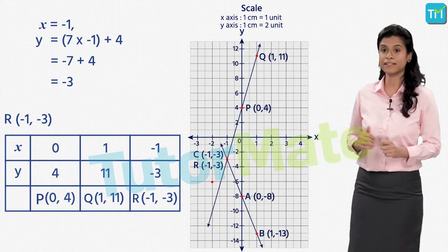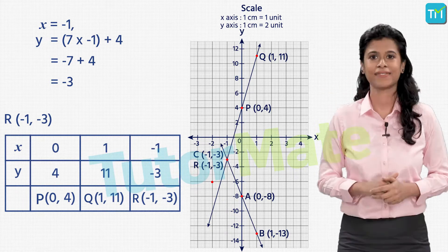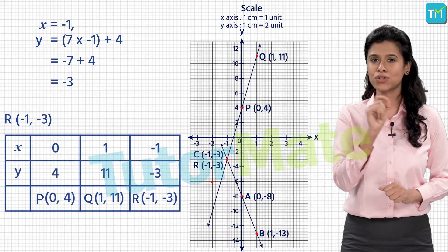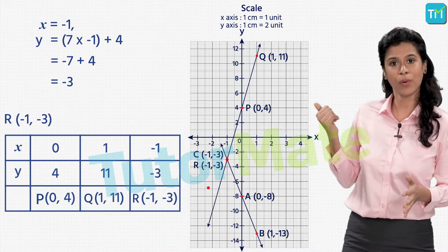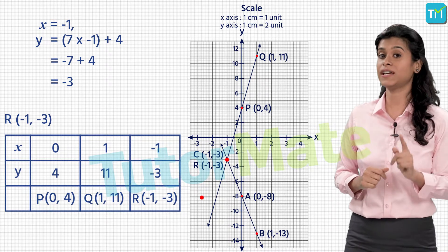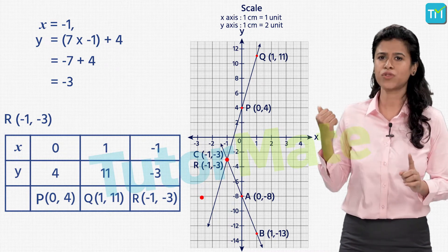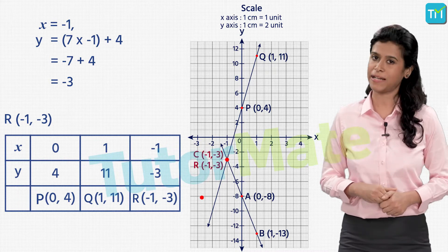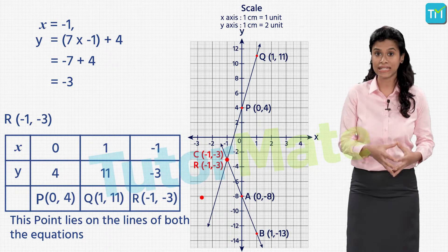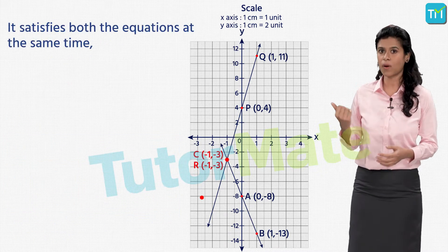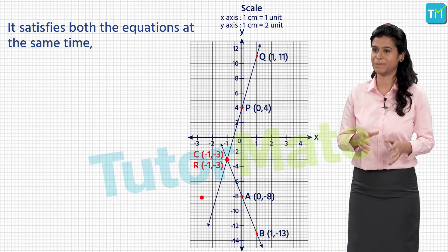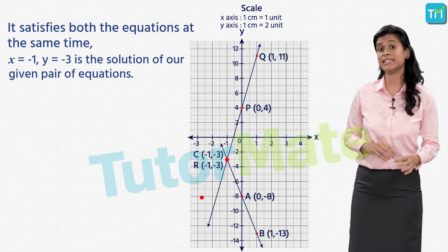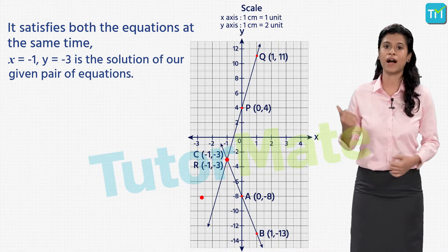Here we have the straight line graphs of two different equations plotted on the same graph. If you look closely you will see that these two straight lines are actually intersecting at a point. The coordinates of this point of intersection are x equal to minus 1 and y equal to minus 3. Since this point lies on the lines of both equations, it satisfies both equations at the same time.